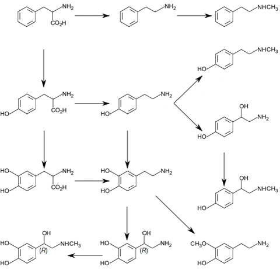Catecholamines have a half-life of a few minutes when circulating in the blood. They can be degraded either by methylation by catechol-O-methyltransferases (COMT) or by deamination by monoamine oxidases (MAO). MAOIs bind to MAO, thereby preventing it from breaking down catecholamines and other monoamines. Catabolism is mediated via COMT, which is present in the synaptic cleft and cytosol, and MAO, which is located in the mitochondrial membrane. Both enzymes require cofactors: COMT uses Mg2+ while MAO uses FAD.